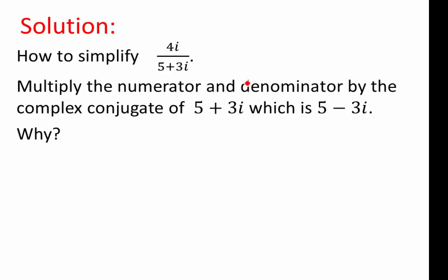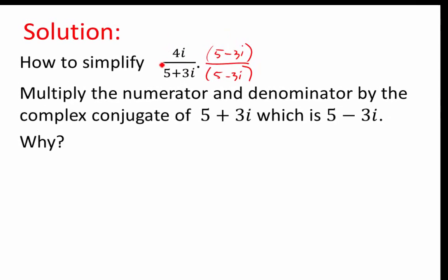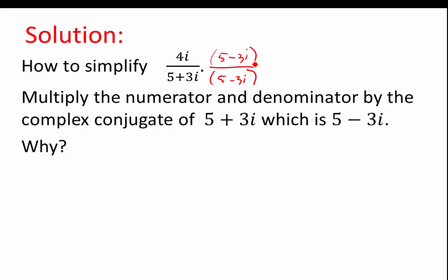We multiply that. It becomes 5 minus 3i at the top, multiply by 5 minus 3i at the bottom as well, because you want to make sure when you're multiplying an expression, you don't want to change the expression. You have to multiply it by something that is equal to 1.